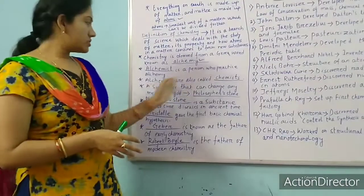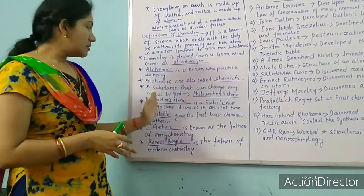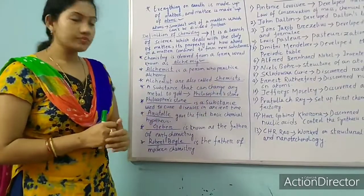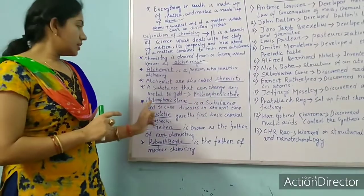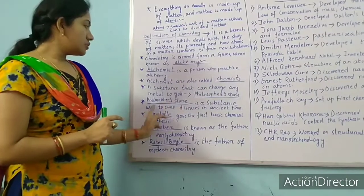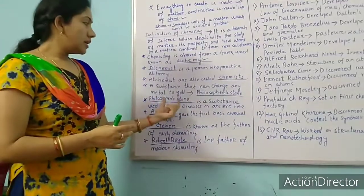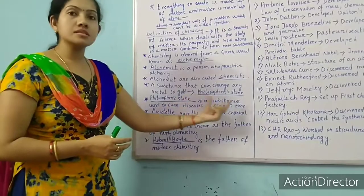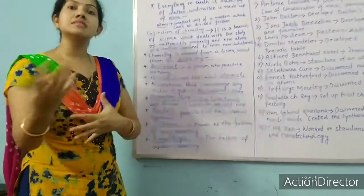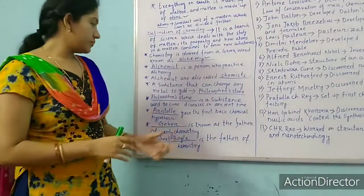So here I have written one question: a substance that can change any metal to gold — what is it? Philosopher's stone. One more question: philosopher's stone is a substance used to cure diseases in ancient times.